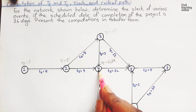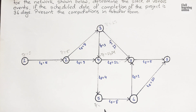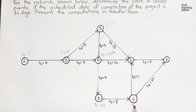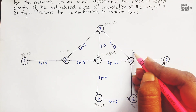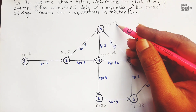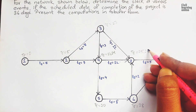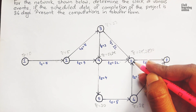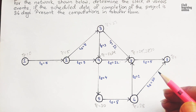TE of event five has one predecessor, event four, so TE of event five is sixteen plus four equals twenty. TE of event six is twenty plus eight equals twenty-eight. Event seven has three predecessors — three, four, and six — so it will have three TE values. Thirteen plus two is twenty-five, sixteen plus two is twenty-eight, and twenty-eight plus two is thirty. Maximum of these three is thirty, so TE of event seven is thirty.